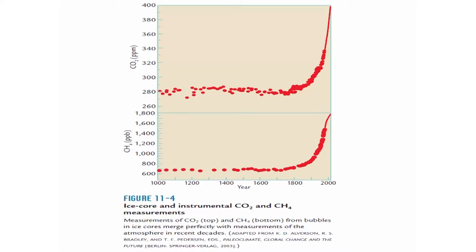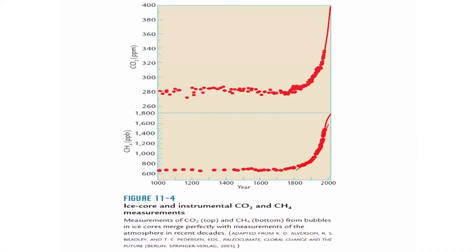Combining tree rings, corals, ice cores and instrumental records for the last few hundred years, carbon dioxide remained fairly constant at about 280 ppm until the industrial revolution began, after which it has been increasing super-exponentially. Methane was at about 650 parts per billion — note this is parts per billion by volume versus parts per million for CO2. Methane is present in much smaller quantities but is 25 times more powerful as a greenhouse gas, so it is still very important. Carbon dioxide is chemically inert and can stay for hundreds of years, while methane gets oxidized when exposed to oxygen and only persists about 8 to 10 years.